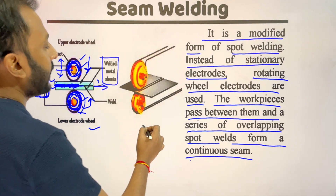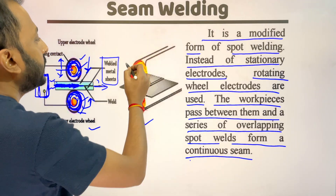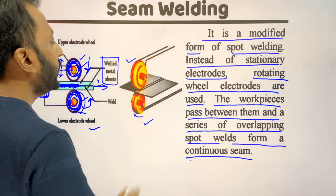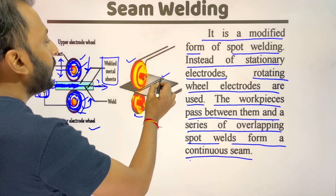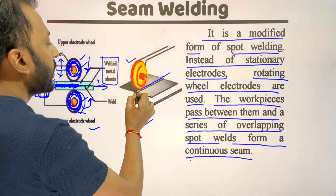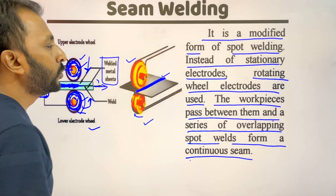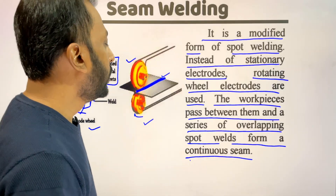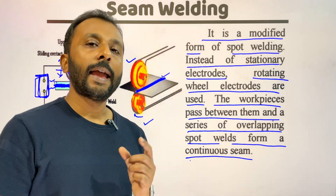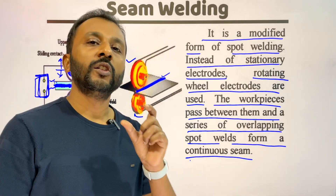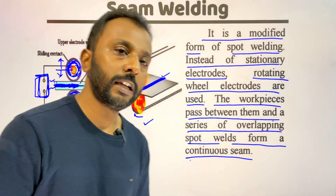We can see the isometric view of the seam welding process. These are the wheels and these are the plates. We can see that the welding is done along the joint of the two metals. Two overlapping metals are being joined and the welding joint is continuous and also leak proof.